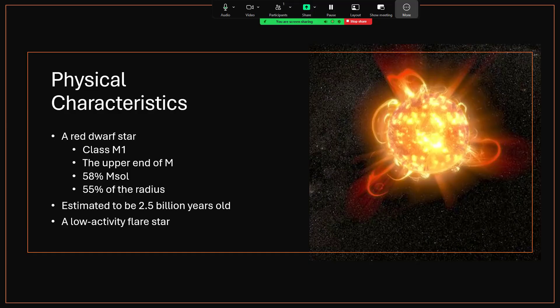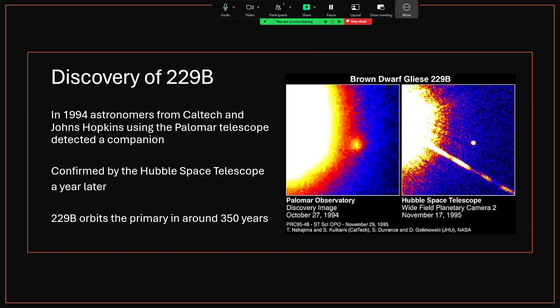And the interesting thing about Gliese 229 is really the discovery of its companion 229B. In 1994 astronomers from Caltech and Johns Hopkins University using the Palomar telescope detected a companion which was then confirmed by the Hubble Space Telescope a year later. And we have the two images on the right hand side here. The Palomar image showing that blob just at the limb of the star, and Hubble showing rather better resolution picking it out in more detail.